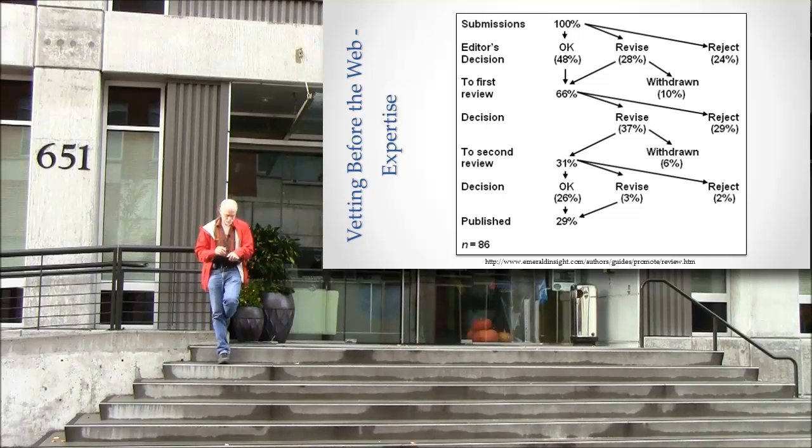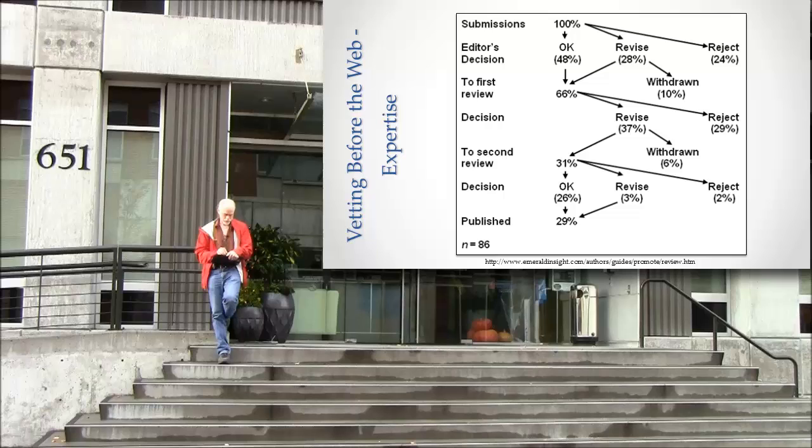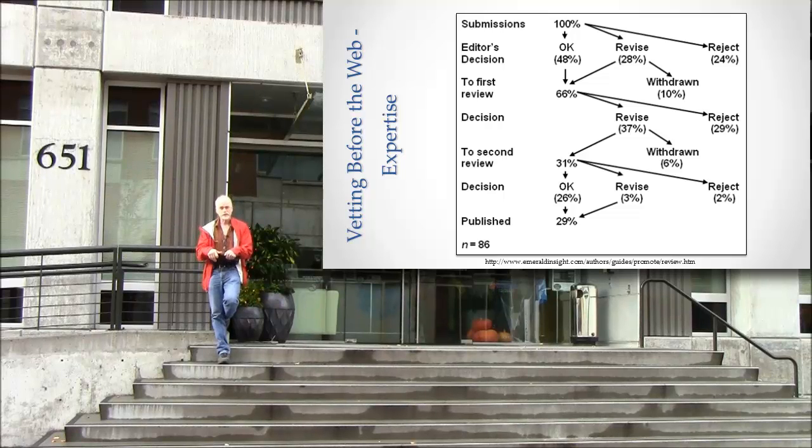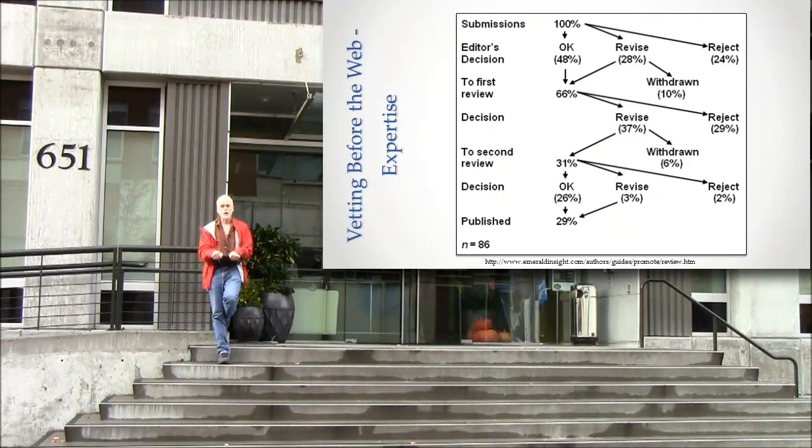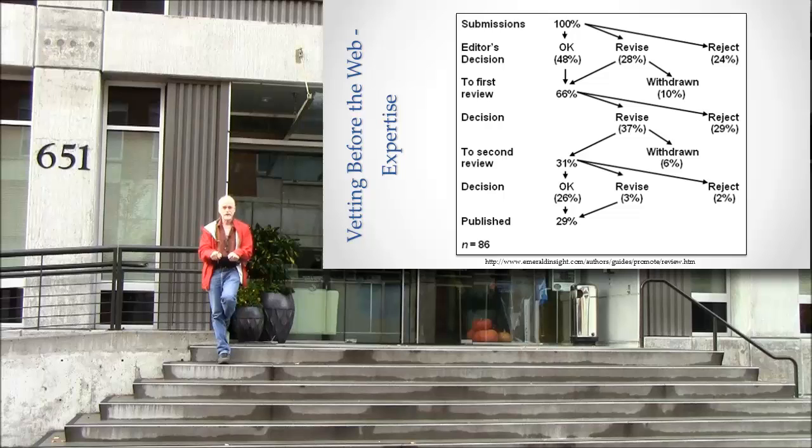People, people, people. Editor's decision—the editor is a person. First review, those reviewers are people. Decision. Somebody, a person, makes a decision. Second review, people. Decision. It's all about people, and it's all about people who are already considered to be authorities making a decision about whether this next thing should be produced.